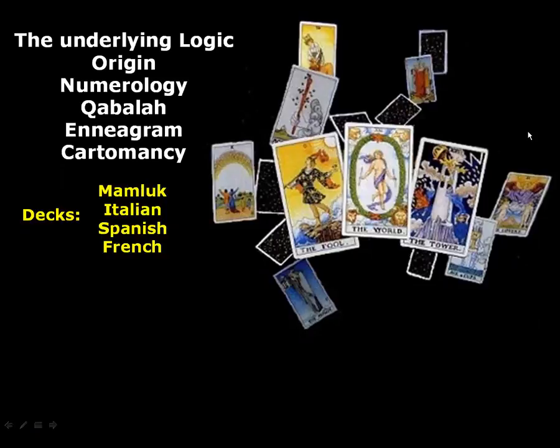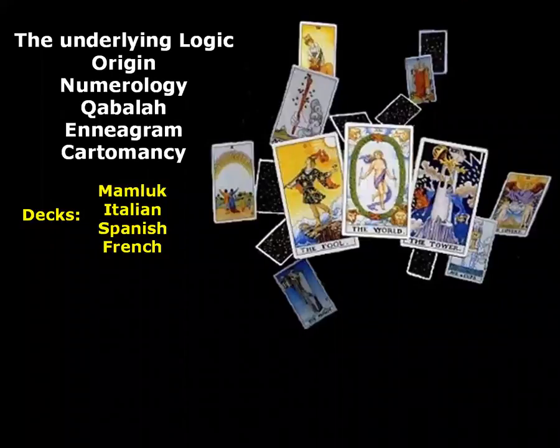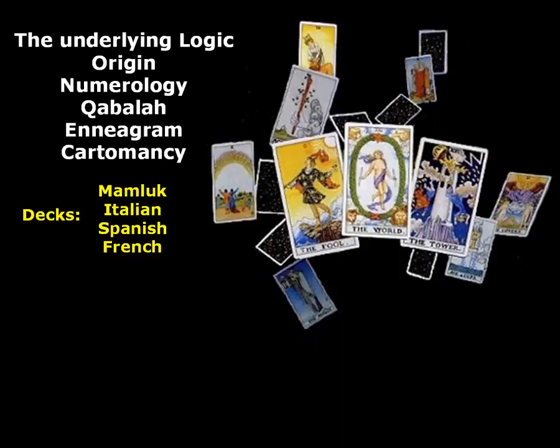I not only share the underlying logic of these 78 cards — the 21 plus one cards of the Major Arcana, plus the 56 cards of the Minor Arcana — I also show the origin of these cards.